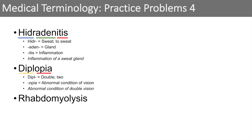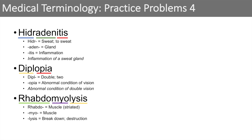The next word is rhabdomyolysis. Rhabdo — in essence, stands for muscle and typically relates to striated muscle. We've learned myo itself means muscle. And we've learned that lysis means breakdown or destruction. So rhabdomyolysis means a destruction or breakdown of striated muscle. It's a condition involving very rapid degradation or destruction of muscle.